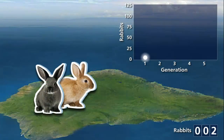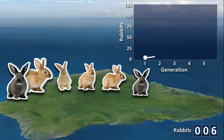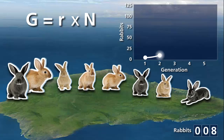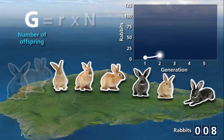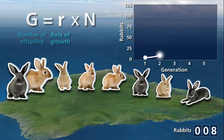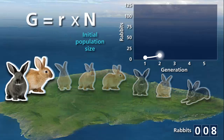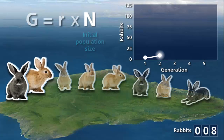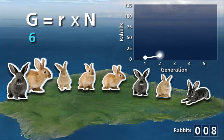Let's look at the exponential growth of this population mathematically, starting with one mating pair. The exponential curve follows the equation G equals R times N, where the number of offspring, G, will be equal to the rate of growth, R — which in this case is 3 rabbits per adult — times the initial population size, N, or 2. So in this example, G is 6, because the rate of growth is 3 rabbits per adult and there were 2 rabbits in the initial population.